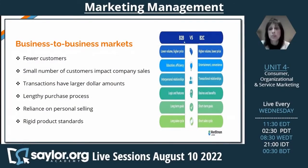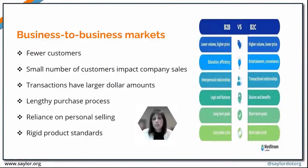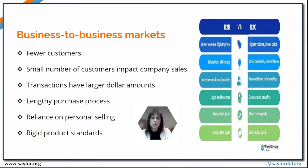Looking at the differences between business-to-business and business-to-consumer markets: a B2B market has fewer customers, and there are fewer players in the overall list of companies buying from an organization. A smaller number of customers will impact company sales overall. Transactions will have larger dollar amounts because companies are buying in volume and larger quantities than individual consumers. The business-to-business decision-making process is also even longer than the consumer process — it is a very lengthy purchase process.